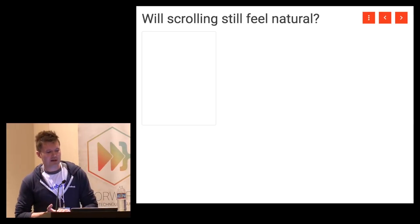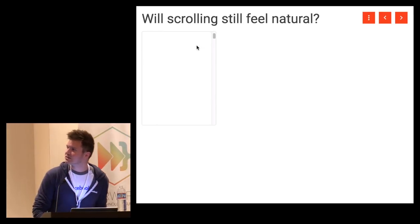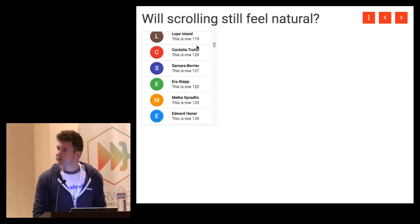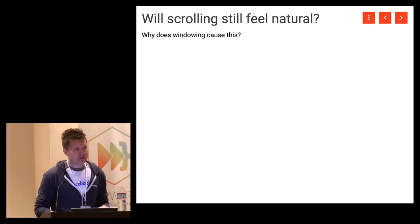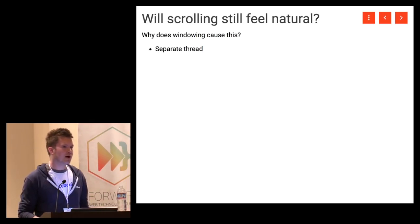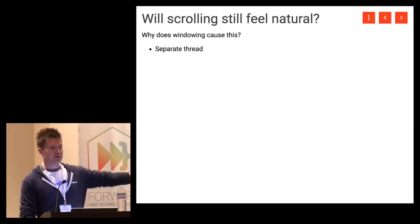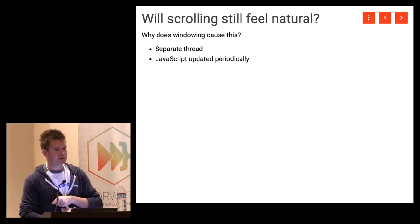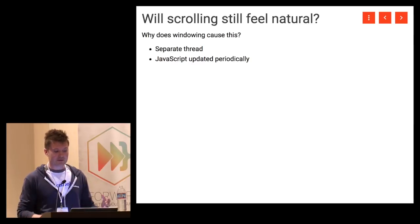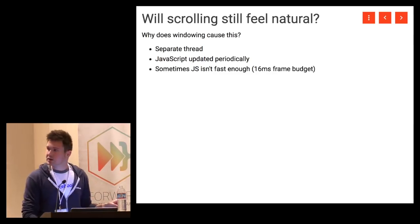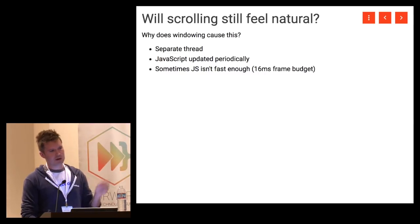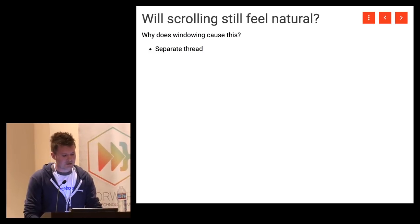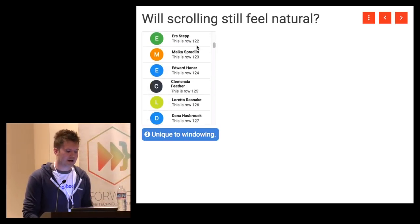There's an interesting challenge windowing libraries face: you can see empty space at the bottom if you do a fling scroll. This is unique to windowing. The browser manages scroll events in a separate thread from the UI thread and periodically notifies JavaScript of a new scroll position via a scroll event. There can be a lot going on at that time — the browser can be doing layouts and paints, or something else running on the user's computer. If JavaScript isn't fast enough and we exceed our 16-millisecond frame budget, we won't keep up with the browser, and JavaScript can fall behind. If we're absolutely positioning items, the list scroll can get ahead of where we're putting items.